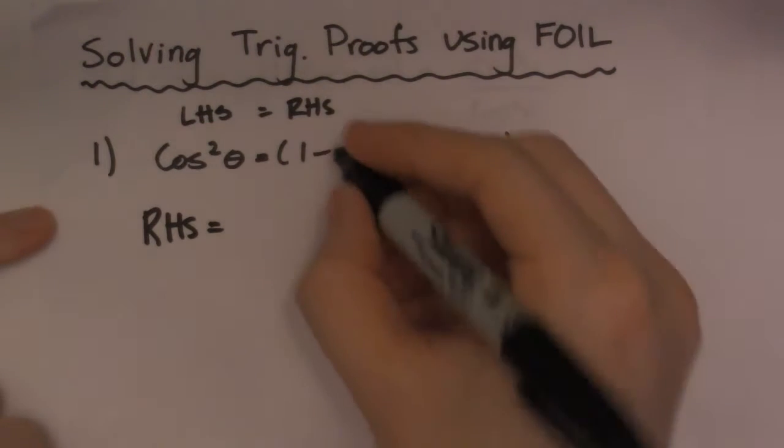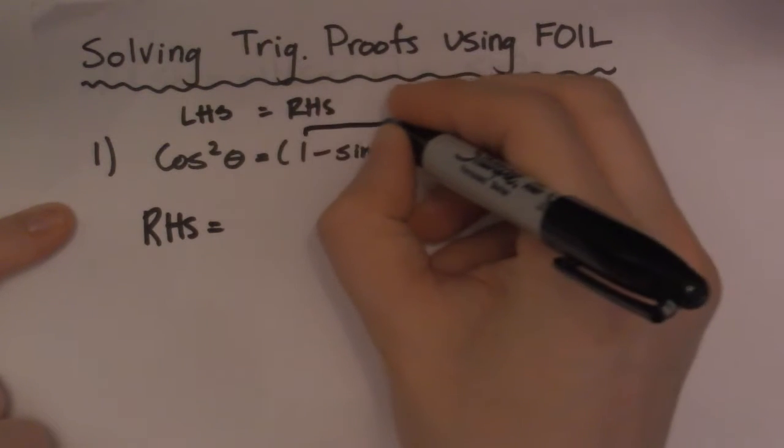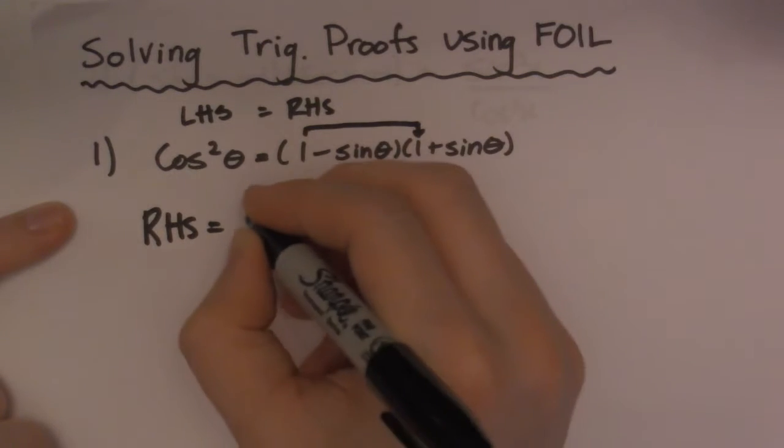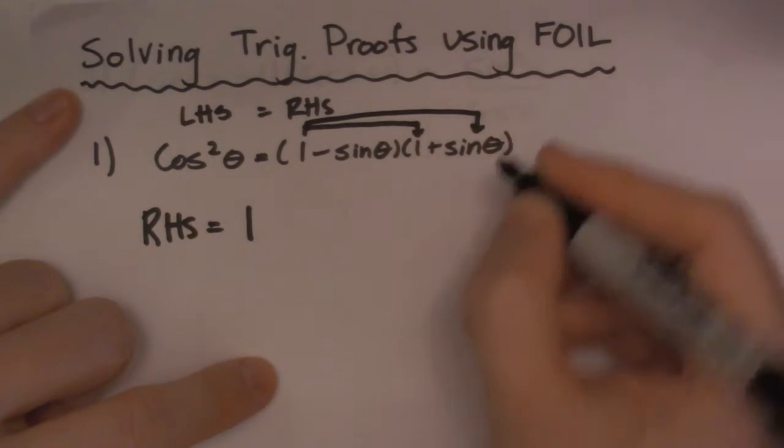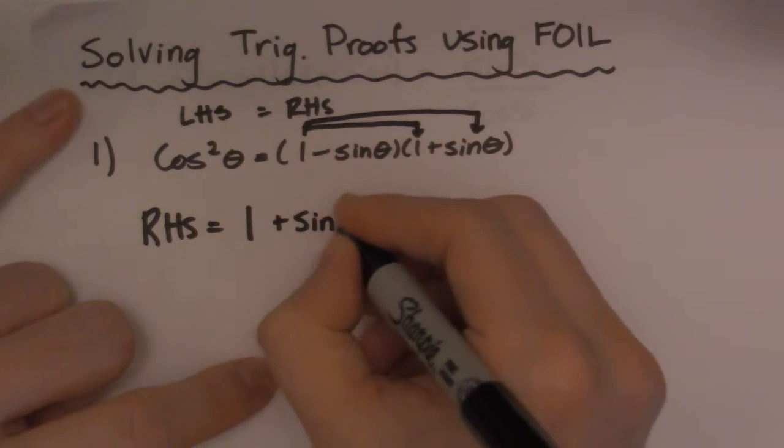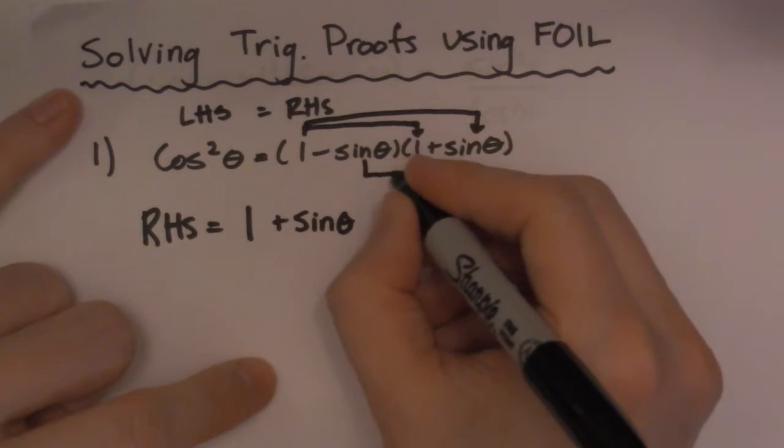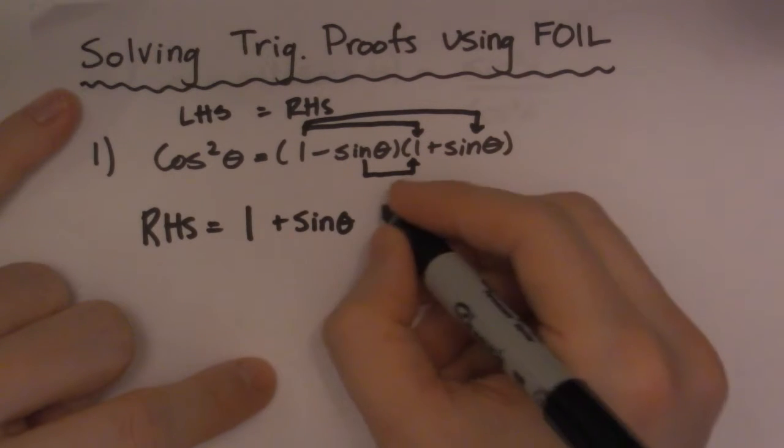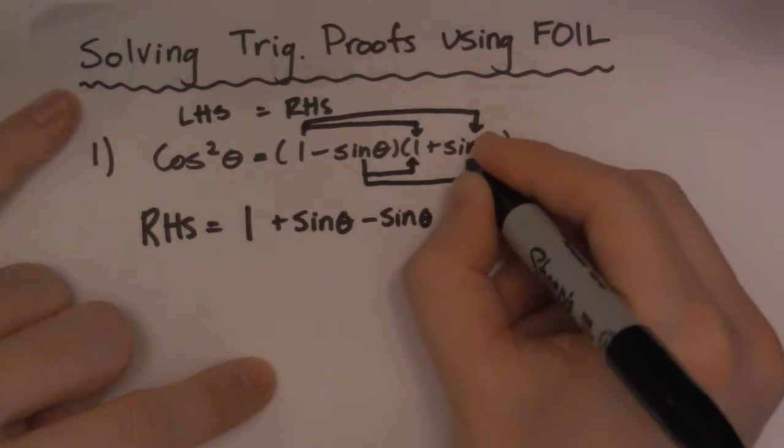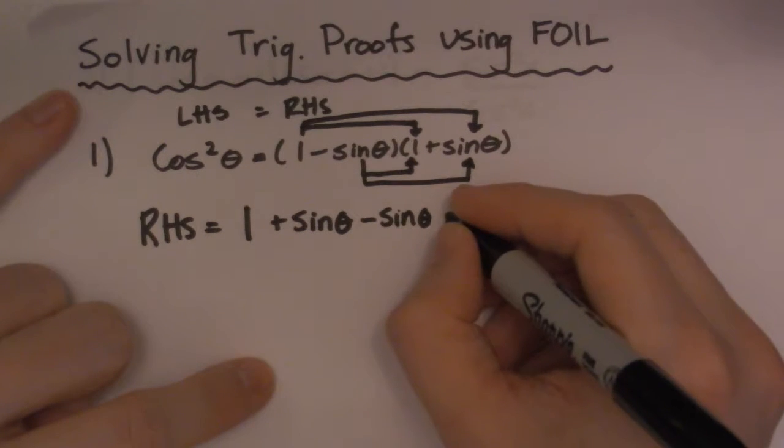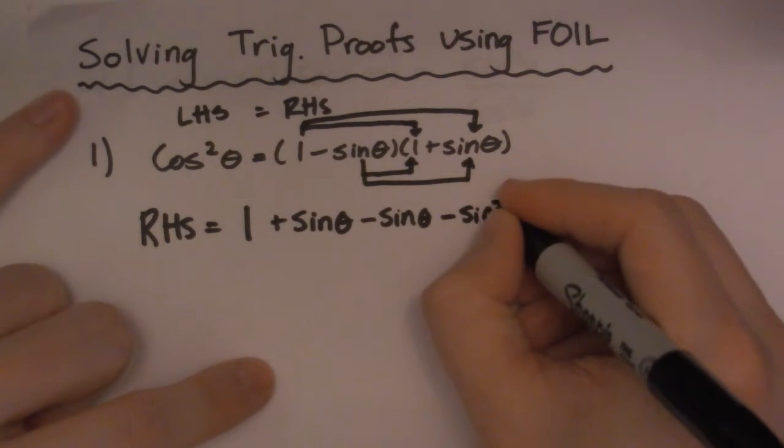And then I'll go, so if you don't know FOIL, first, so 1 times 1 is 1. Then outside, 1 times sine is positive sine. And then inside, two of these guys, negative sine theta. And then last, negative sine theta times sine theta is a negative sine squared theta.